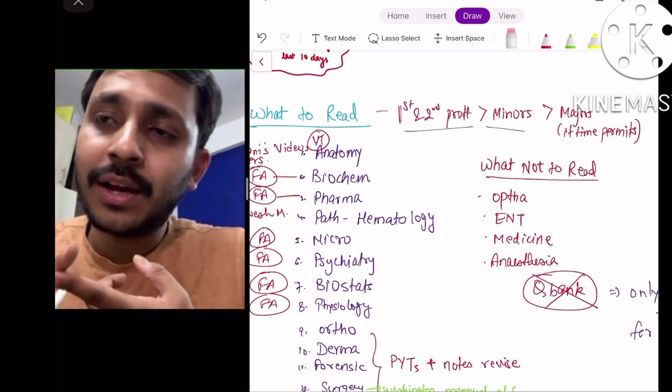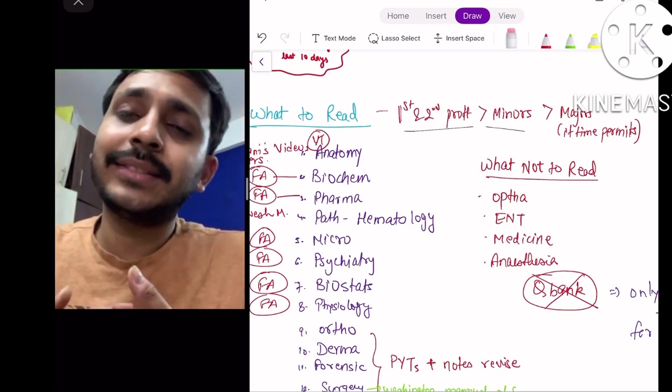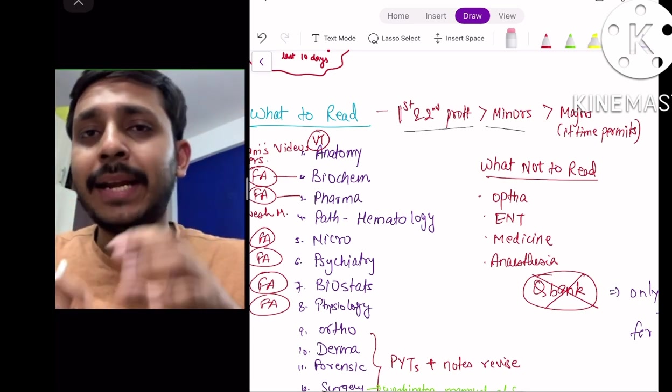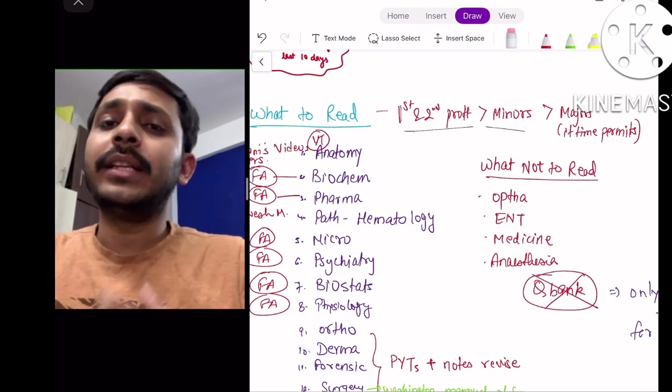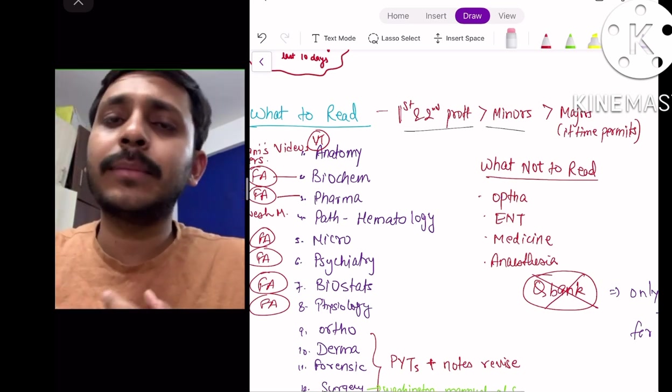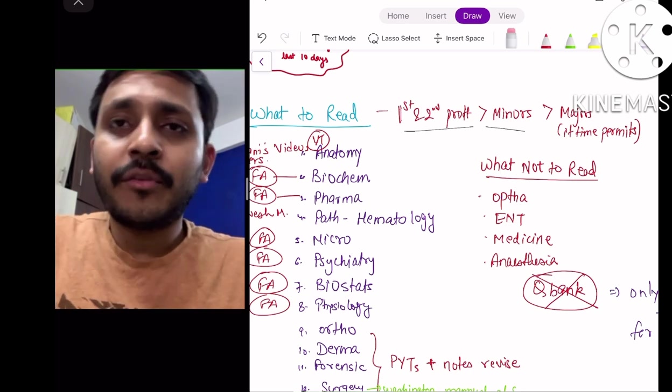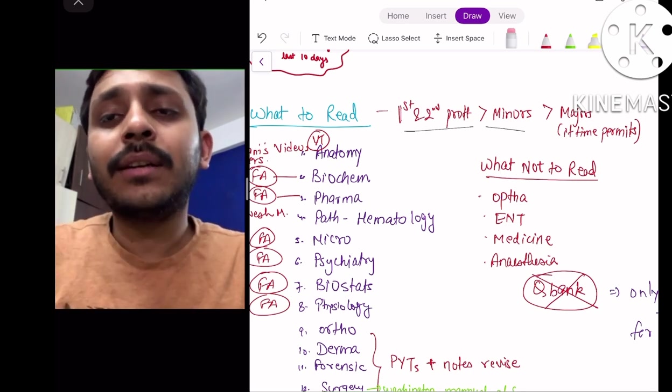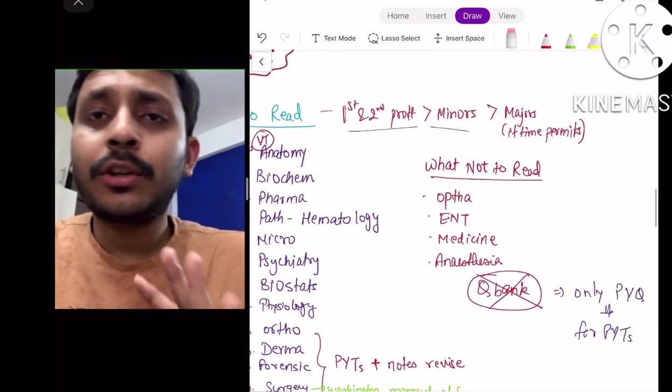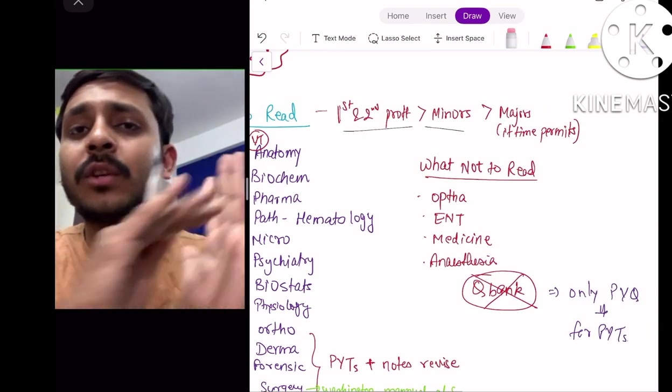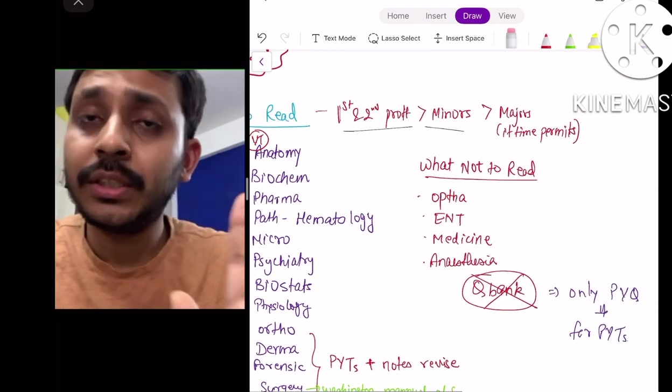You don't have to read optha, ENT, medicine or anaesthesia. I think spending time on these subjects will take up your time and the yield of questions coming from these subjects is very less. A lot of questions of your medicine will be solved by pathology, pharmacology and microbiology. Also, I'd like to say that don't waste your time doing question bank right now. Just do previous questions and just read theory in these 2 months.